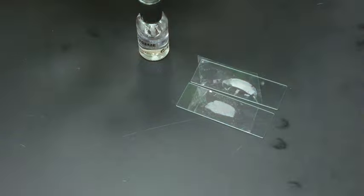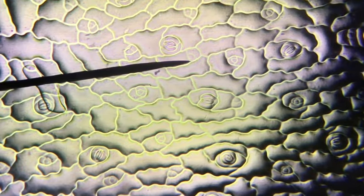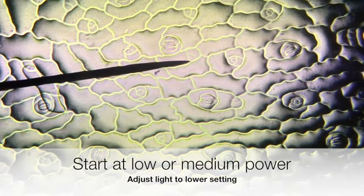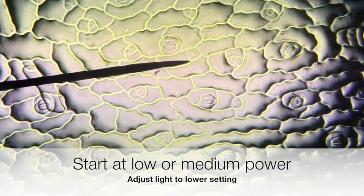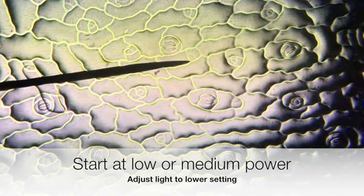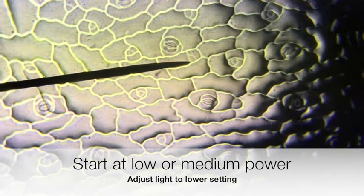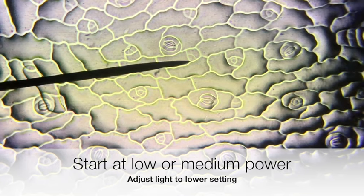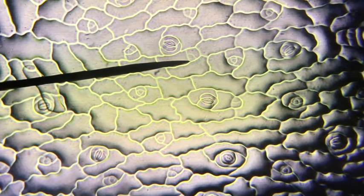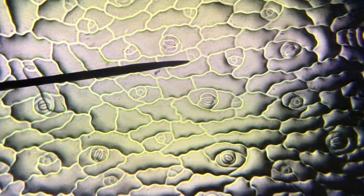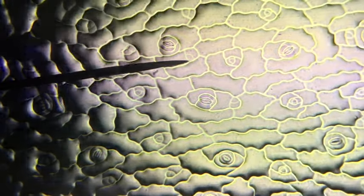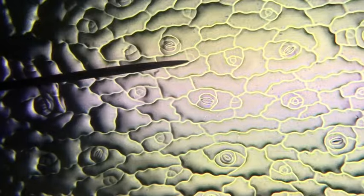Alright, so here I've got the succulent under 100 times magnification. I had started under 40X and didn't feel like I needed to zoom in on any particular stomata or stoma. They're definitely in the field of view, there's definitely about, I don't know, 5 or 10 of them. I'll switch to high power.